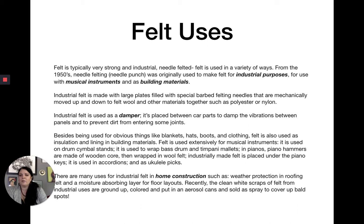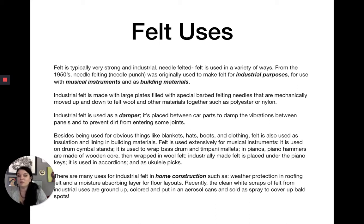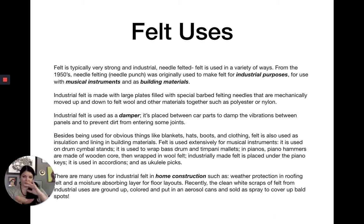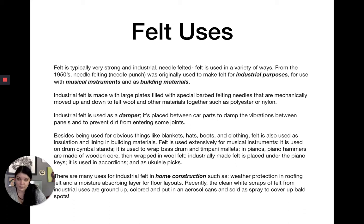Instead of wetness and motion causing tangling, needle felting physically and violently rips the fiber through itself to cause tangling. In some industrial materials they also use synthetic materials like nylon and polyester. Industrial felt is mostly used as a damper — a material used to make something quieter. It's placed between car parts to dampen vibrations between panels and to prevent dirt from entering joints, and it reduces the vibration of mechanical things like cars.